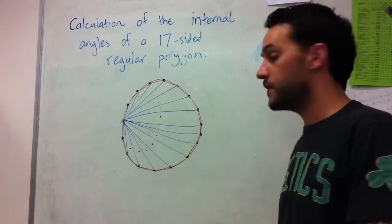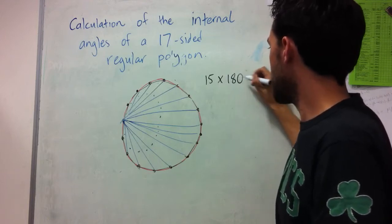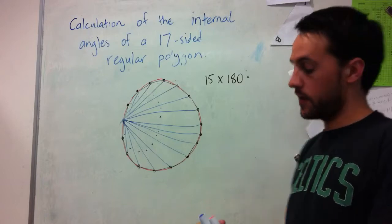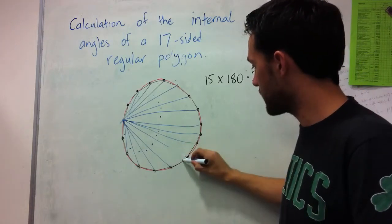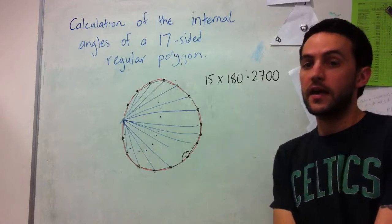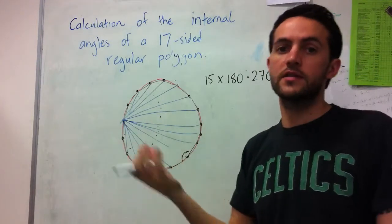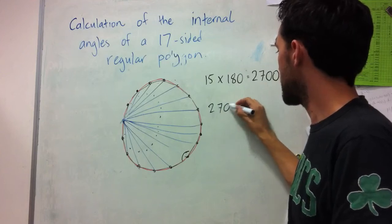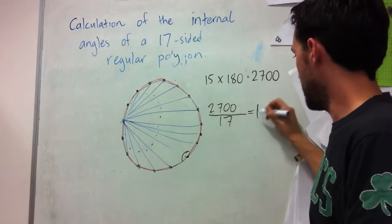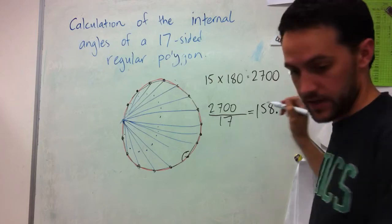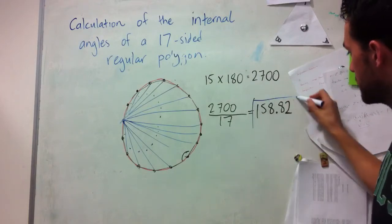Here I've got my 15 triangles, so the total internal angles will be 15 times 180 degrees for each triangle, and that gives me a value of 2,700. Then each internal angle that I have for my shape is going to be a 17th of this, because I've got 2,700 and because all of the angles are equal, it's divided equally between those angles. So I have 2,700 divided by 17, and that gives me approximately 158.82. This is my internal angle.